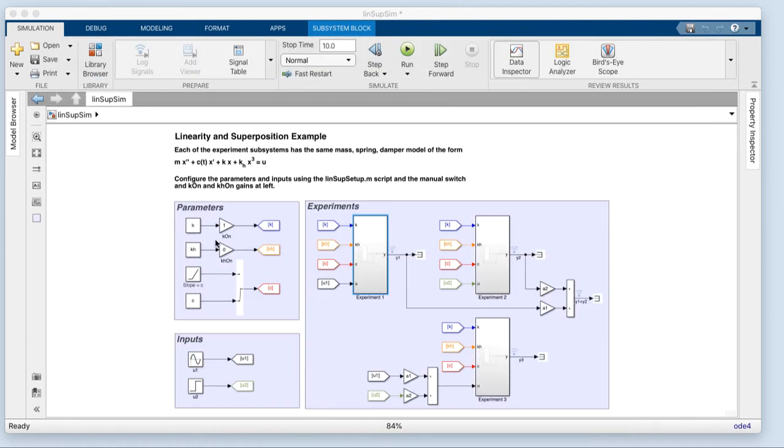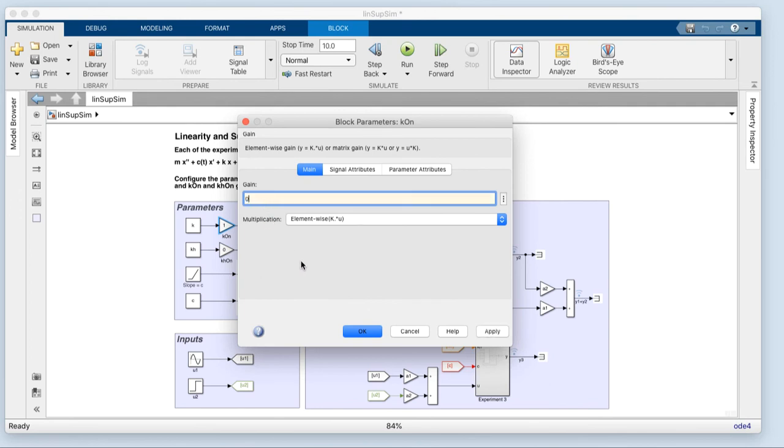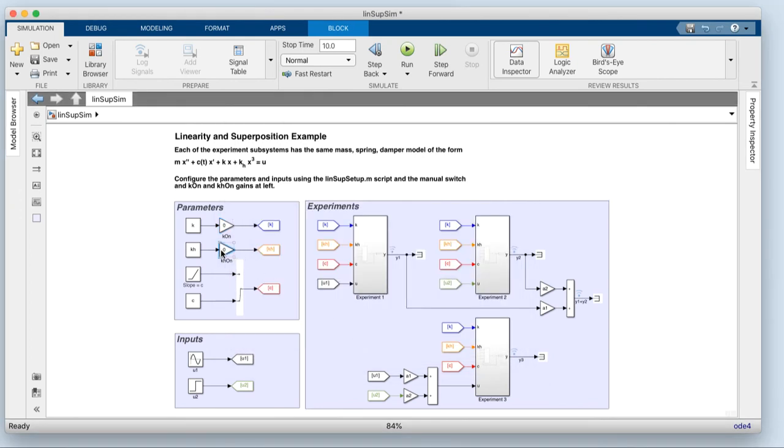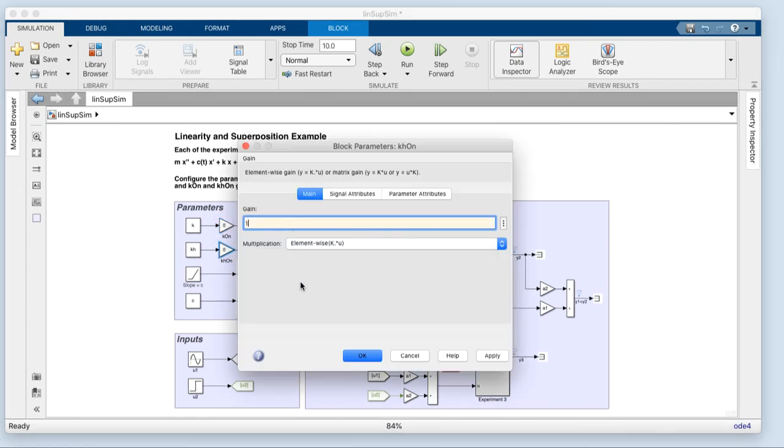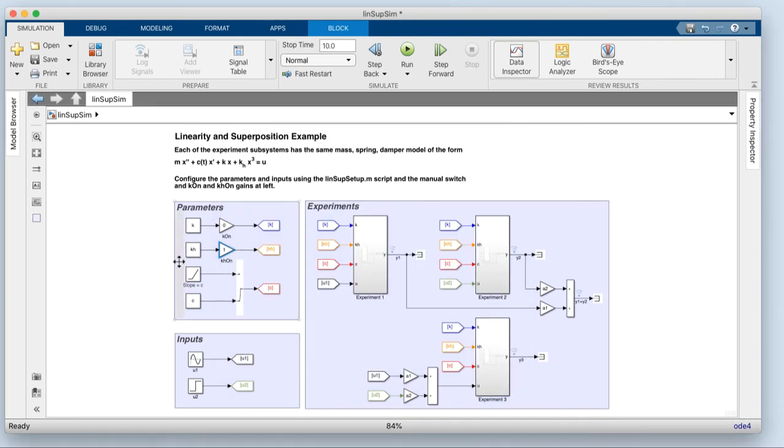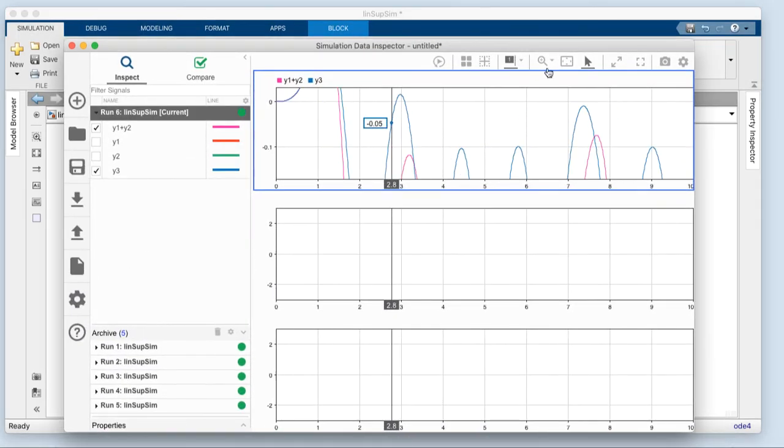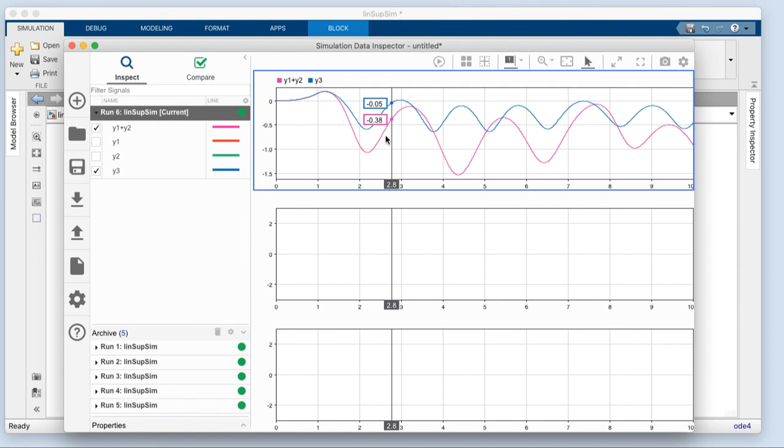Let's do another one. Let's go to the non-linear case, the one that we looked at in the example just a minute ago. Okay, so I've now made it non-linear. It's got the constant damping. Run it. Click on this little data inspector button. Oh, that's so not equal. What this is telling us is that Y3 is not equal to Y1 plus Y2. And so indeed, that system is non-linear.